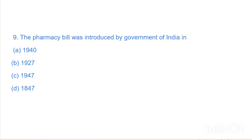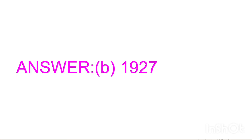Next question: The pharmacy bill was introduced by the Government of India in — Option A: 1940, Option B: 1927, Option C: 1947, Option D: 1847. Answer is Option B, 1927.